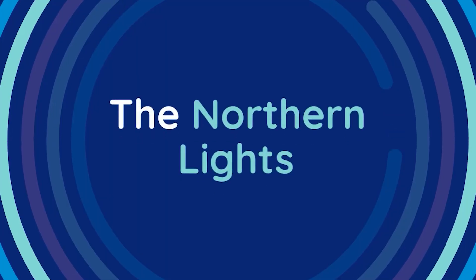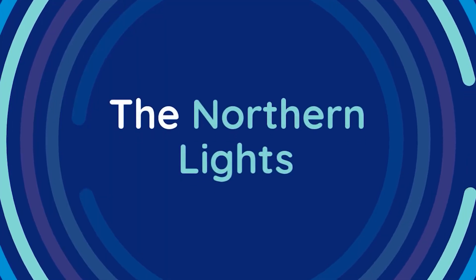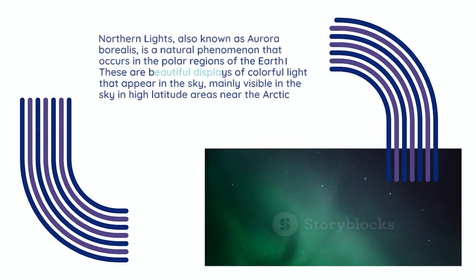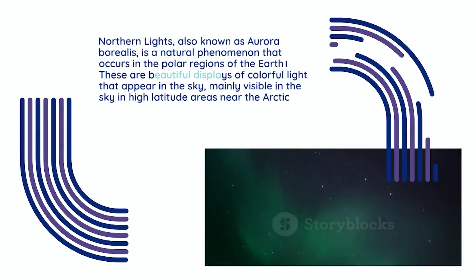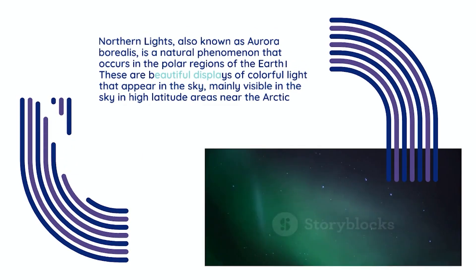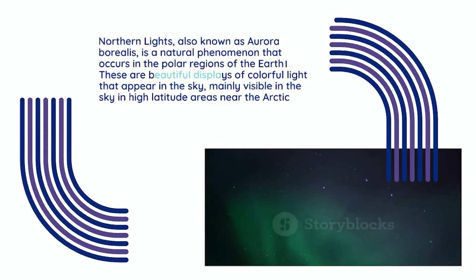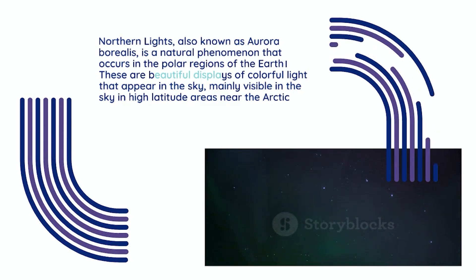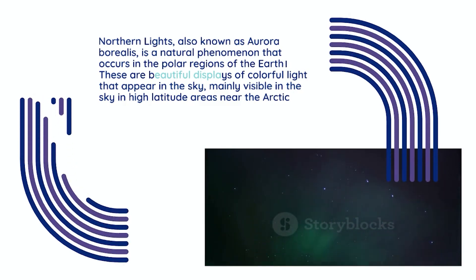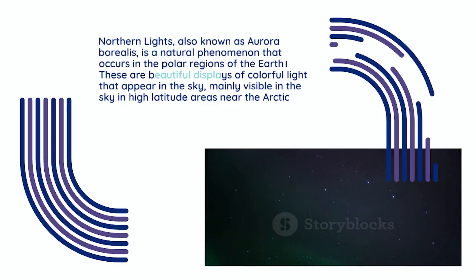Northern Lights, also known as Aurora Borealis, is a natural phenomenon that occurs in the polar regions of the Earth. These are beautiful displays of colorful light that appear in the sky, mainly visible in high latitude areas near the Arctic.